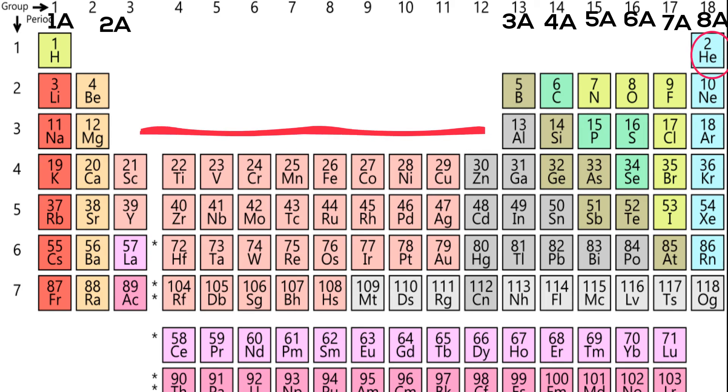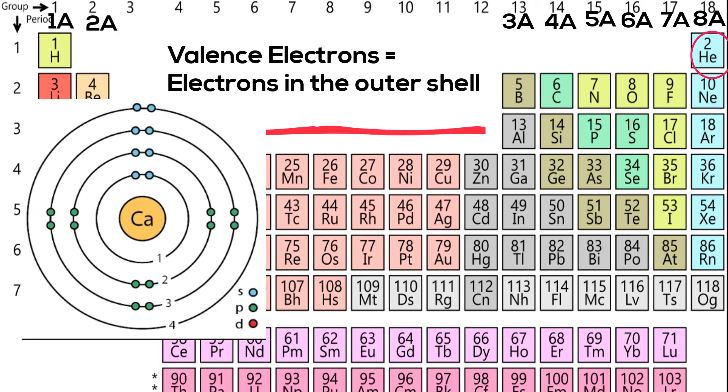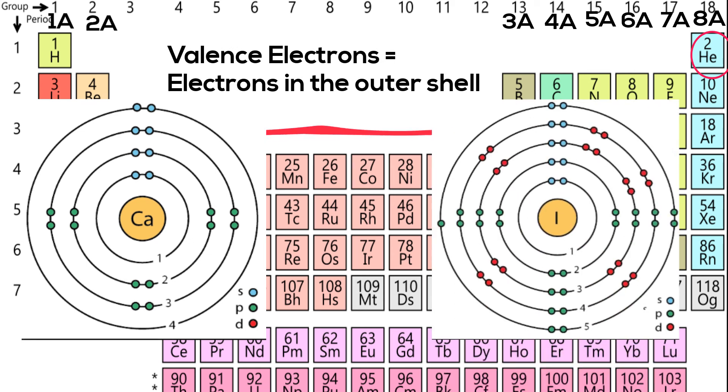With the exception of helium, each element contains the number of valence electrons as the group number. Group 2A have two valence electrons. Group 7A have seven.